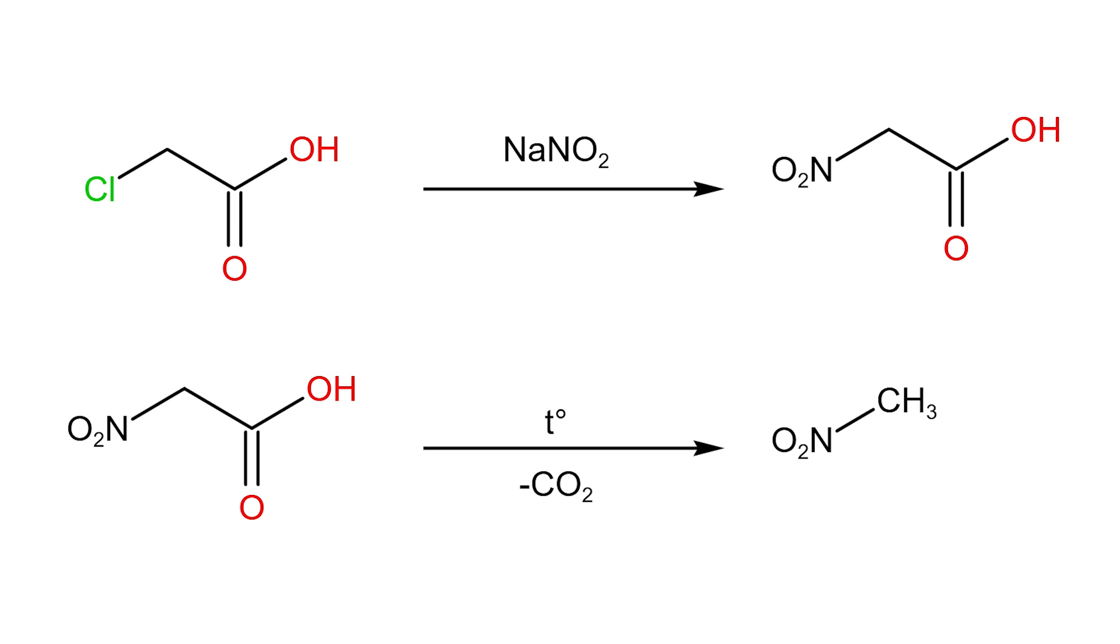Okay, so my plan to synthesize this chemical is to use chloroacetic acid. I will replace the chlorine atom with a nitro group using sodium nitrite. Then I will decarboxylate the resulting nitroacetic acid to nitromethane. Without further ado, let's get started.